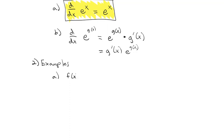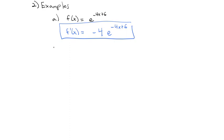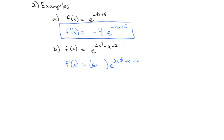Let's look at some examples. For f of x equals e to the negative 4x plus 6: f prime of x — the derivative of e to the stuff is e to the stuff, so e to the negative 4x plus 6, multiplied by the derivative of the stuff, which is negative 4. Next, for f of x equals e to the 2x cubed minus x minus 7: the derivative is e to the 2x cubed minus x minus 7, times the derivative of the stuff, which is 6x squared minus 1.